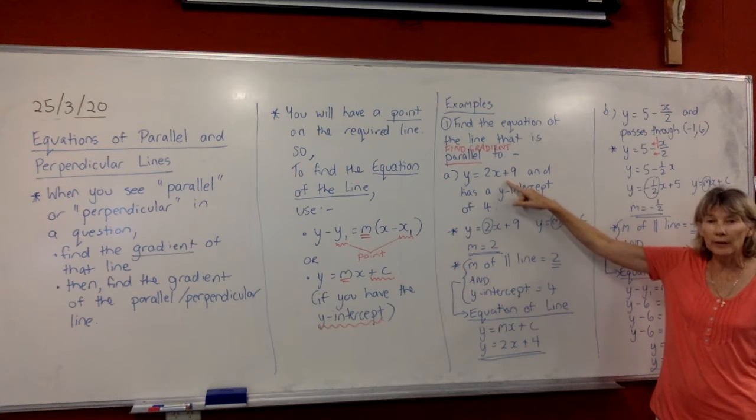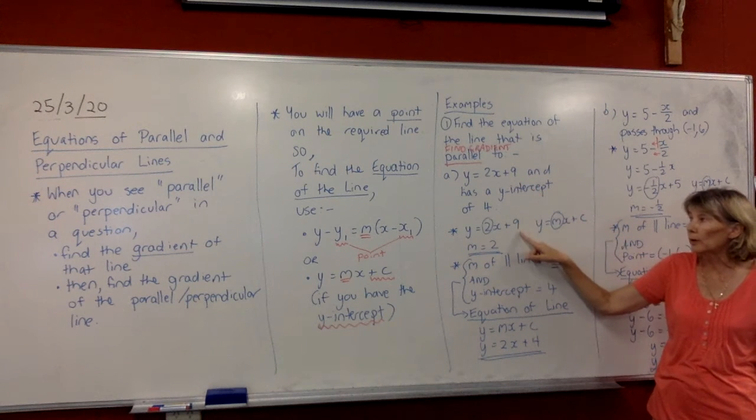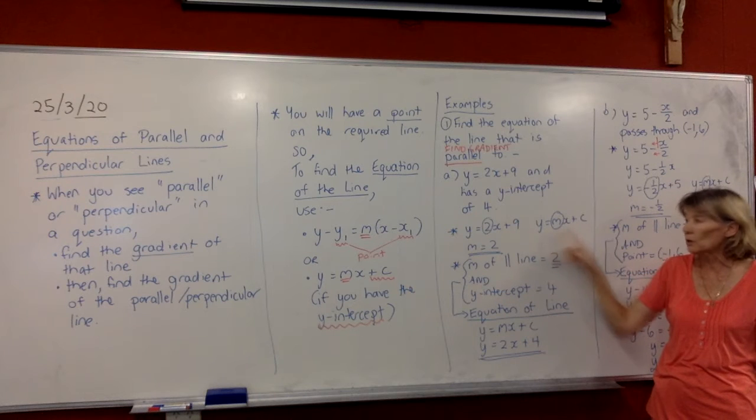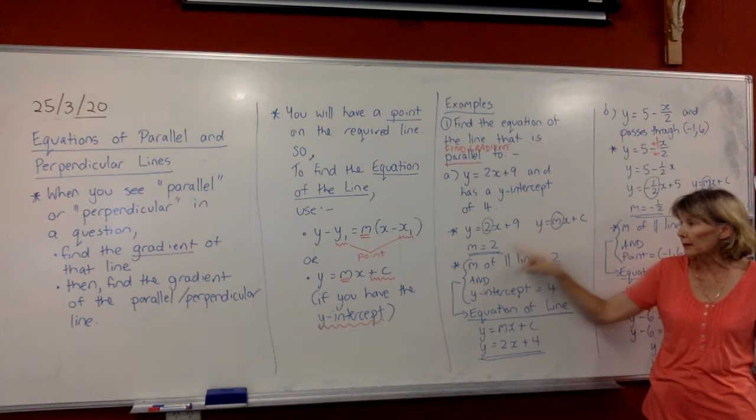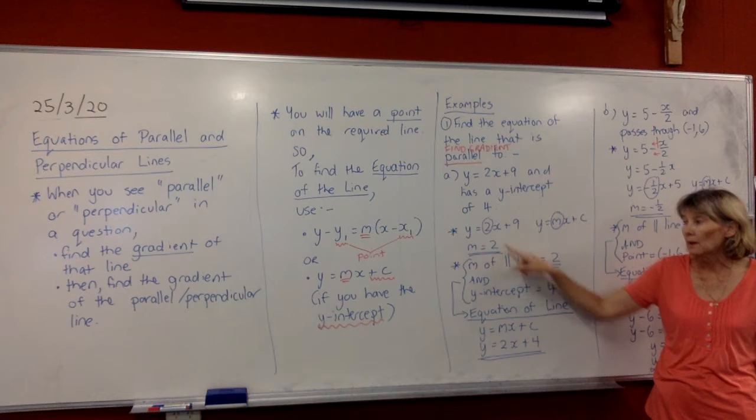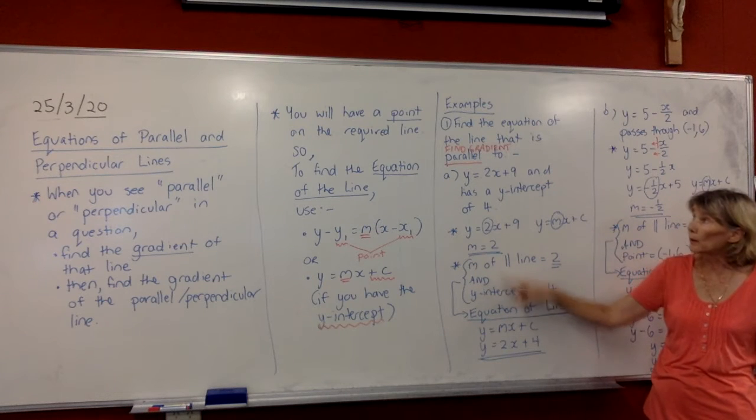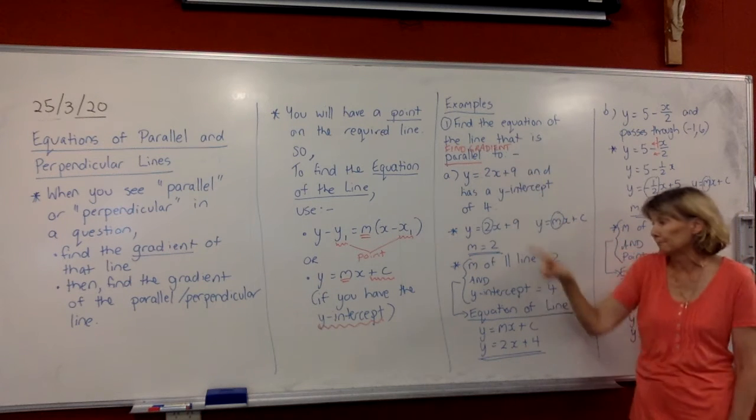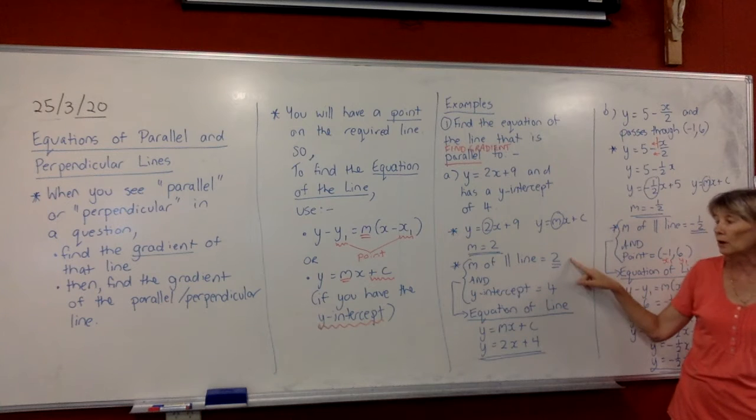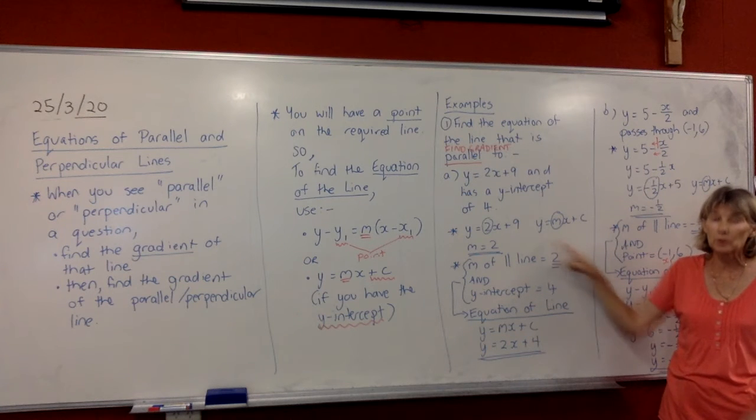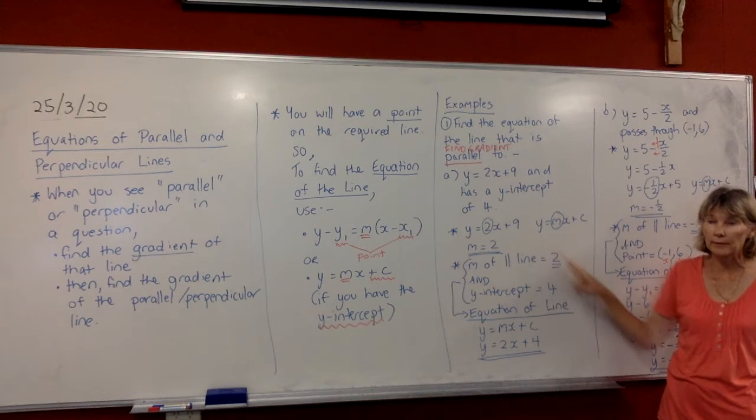So that's the equation of the line we've given us. We're going to find the gradient of that line. And because it's already in this form, it's easy to see that the gradient is 2. Then you are going to find the gradient of the parallel line. So the gradient of the parallel line will also be equal to 2, because we know that on parallel lines they have the same gradient.